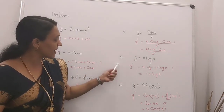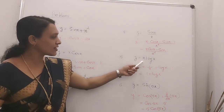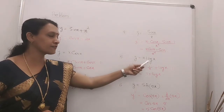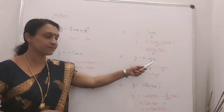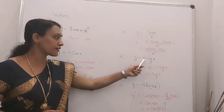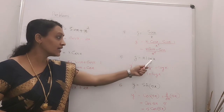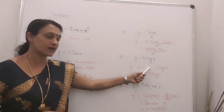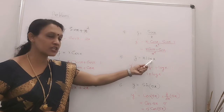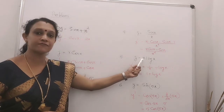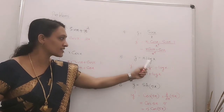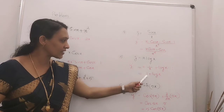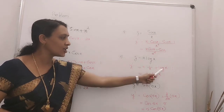Question 5: y is equal to x into log x. This is of the form u into v, a product. Applying the product rule: first function x into derivative of log x which is 1 by x, plus second function log x into derivative of x which is 1. The x's cancel, giving the answer 1 plus log x.